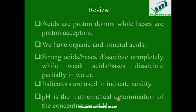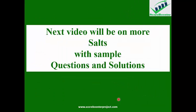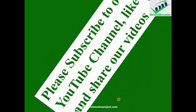To review: acids are proton donors while bases are proton acceptors. We have mineral acids and organic acids as the two broad types. Strong acids and bases dissociate completely, while weak acids and bases dissociate only partially in water. Indicators are used to indicate acidity, and pH is the mathematical determination of the concentration of hydrogen ions. Thank you for listening to this lecture. We are going to consider salts in our next class. Stay tuned, enjoy your day, and don't forget to share and like our videos.